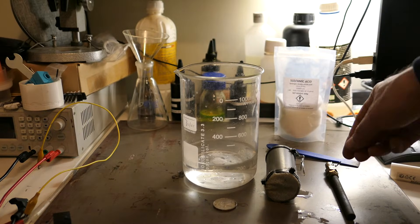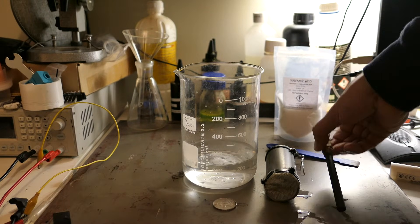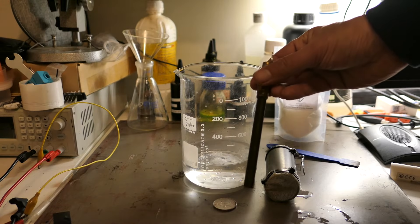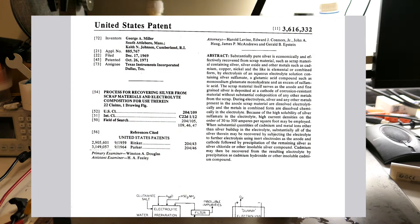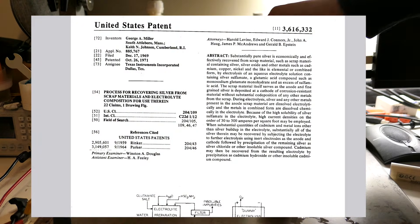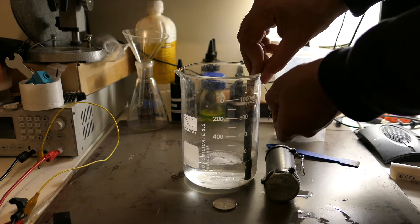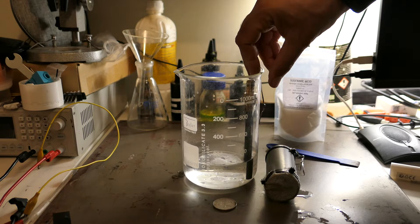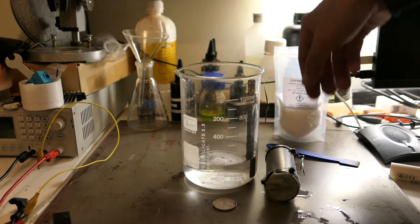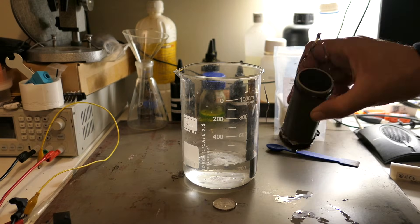That's where this new process comes in. We found a method described in an old patent that allows us to refine silver using sulfamic acid as the electrolyte instead of silver nitrate. Sulfamic acid is much more affordable, easier to obtain, and safer to handle than nitric acid.